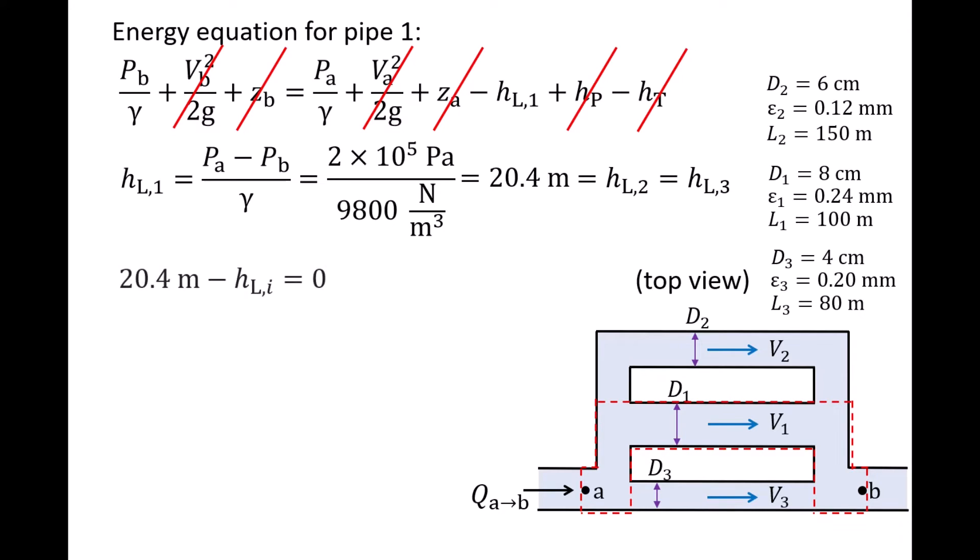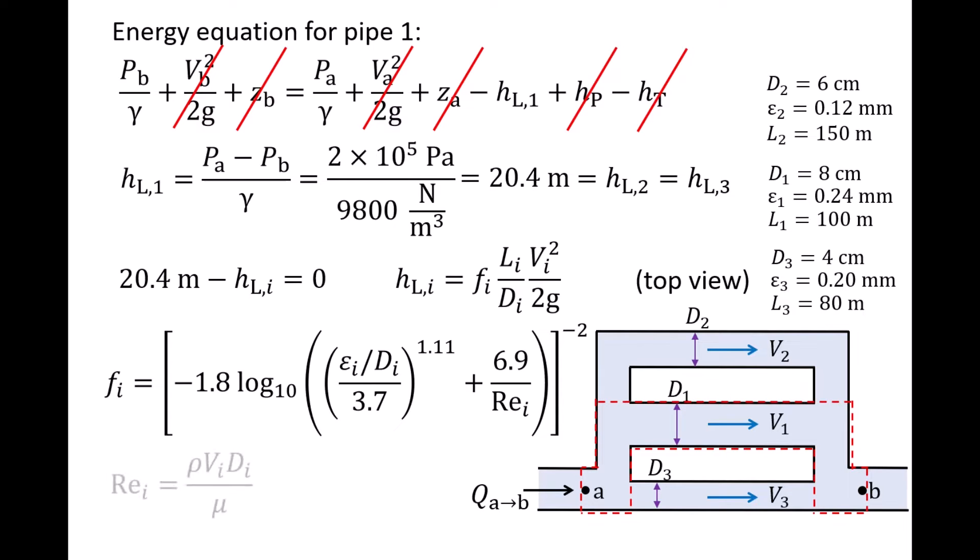Since the same equation applies to all three pipes, we will temporarily replace the subscript 1 in the energy equation with a subscript i, where i can be 1, 2, or 3. The major loss through pipe i is calculated from the Darcy-Weisbach equation, which is the friction factor fi times pipe length li over pipe diameter di times speed vi squared divided by 2 times the gravitational acceleration g. If the flow is turbulent, the friction factor can be calculated from the Haaland equation and is a function of the absolute roughness epsilon i, pipe diameter di, and Reynolds number rei. The Reynolds number for pipe i is fluid density rho times flow speed vi times pipe diameter di divided by the absolute viscosity mu. There is no subscript i for density and viscosity because we assume those two quantities are constant throughout the flow.